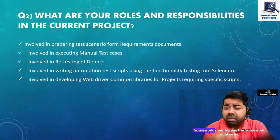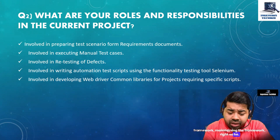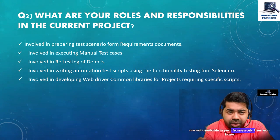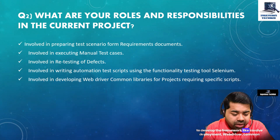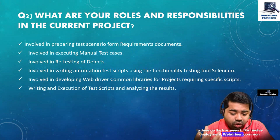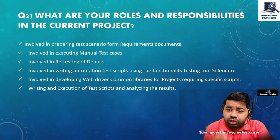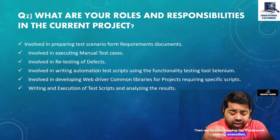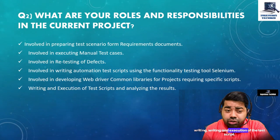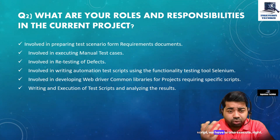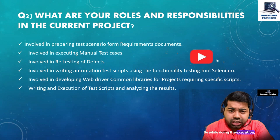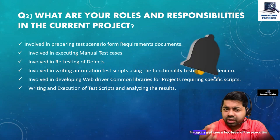When doing automation, you have multiple tasks: writing scripts, developing the framework, and maintaining it. If the required methods are not available in your framework, you need to develop them — for example, deploying WebDriver common libraries for specific project requirements. Once the test scripts are developed, you also execute them and analyze the results, identifying failures during execution.